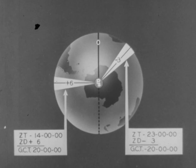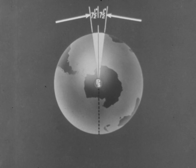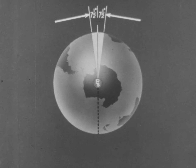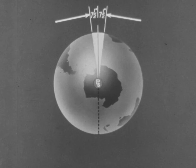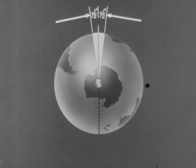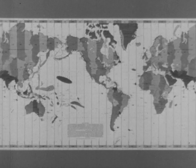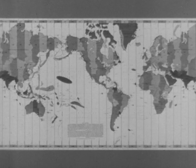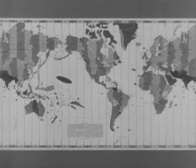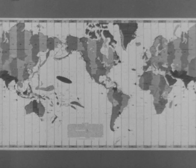Remember, zone time is the time kept in an area seven and one-half degrees on either side of the central meridian of the zone, and is the local civil time of that central meridian. If we project this zone time diagram on a Mercator projection of the world, we can show the relationship of zone time to the times at various positions on the earth's surface.